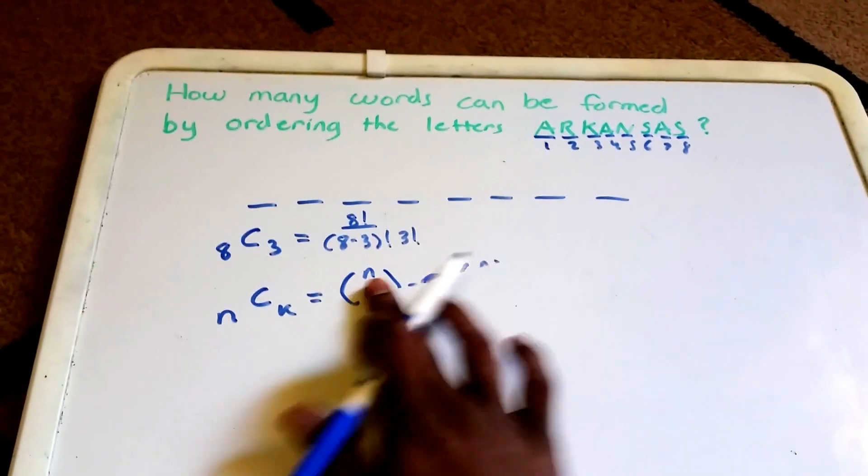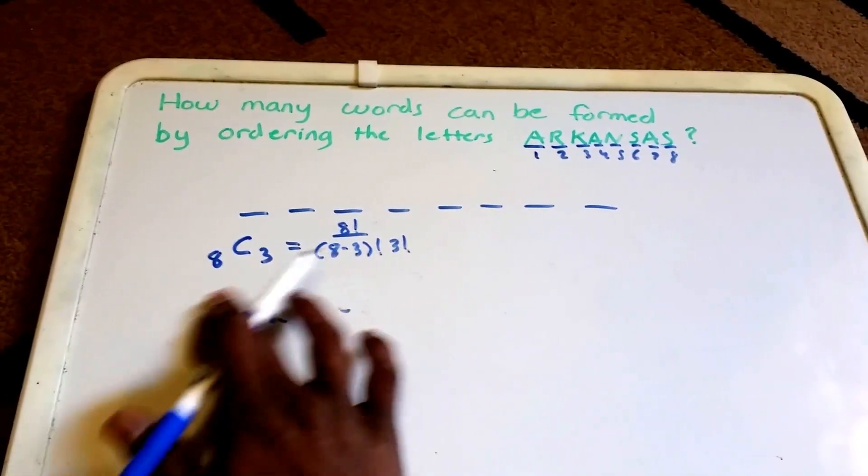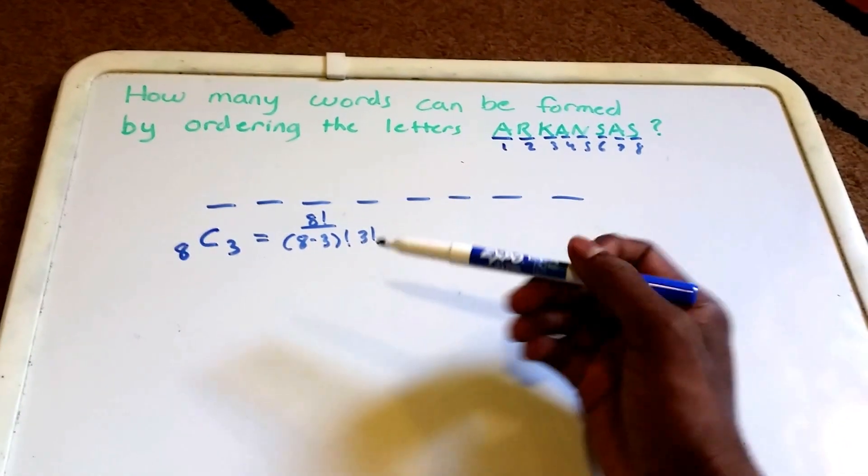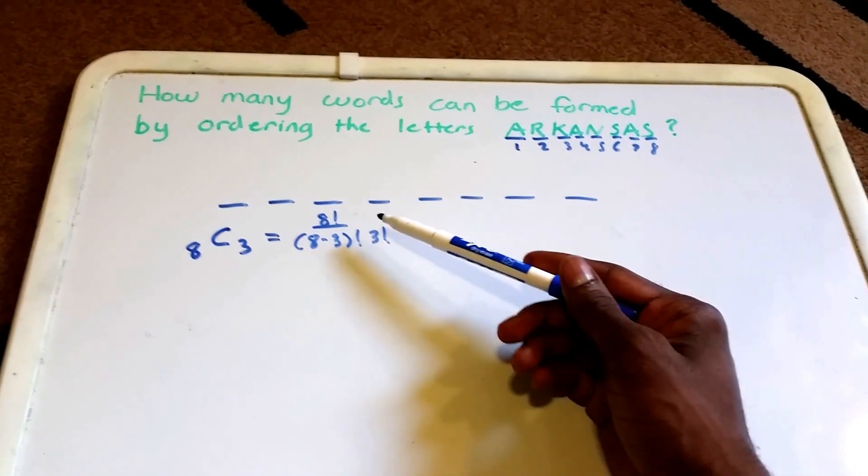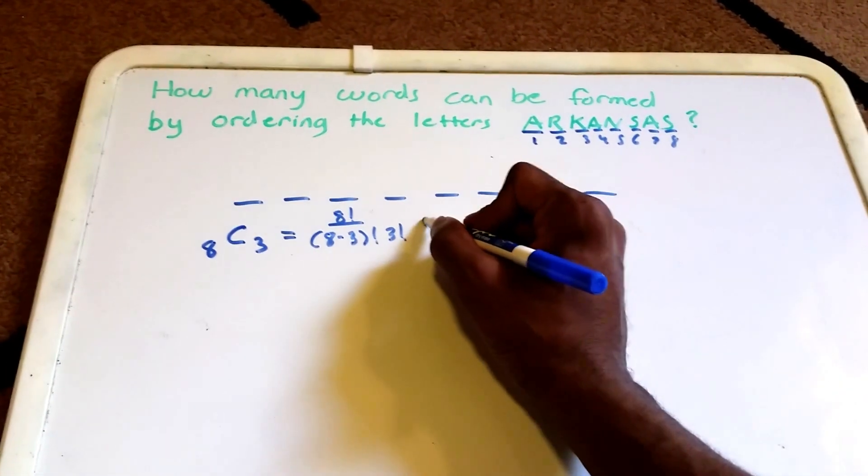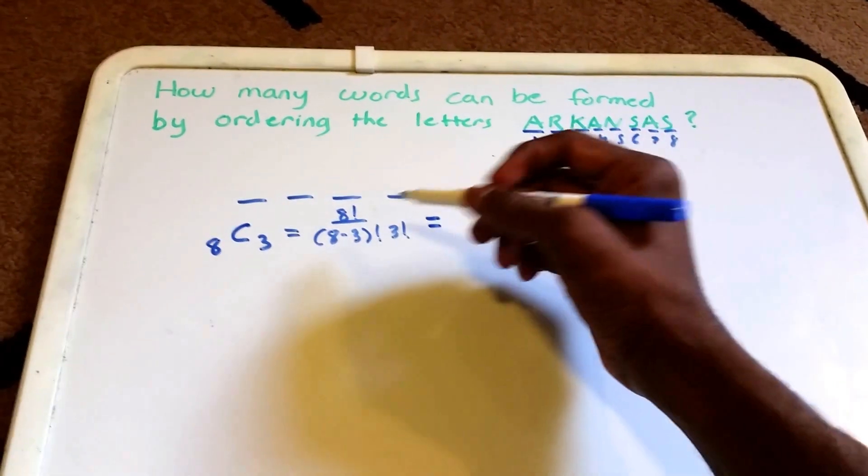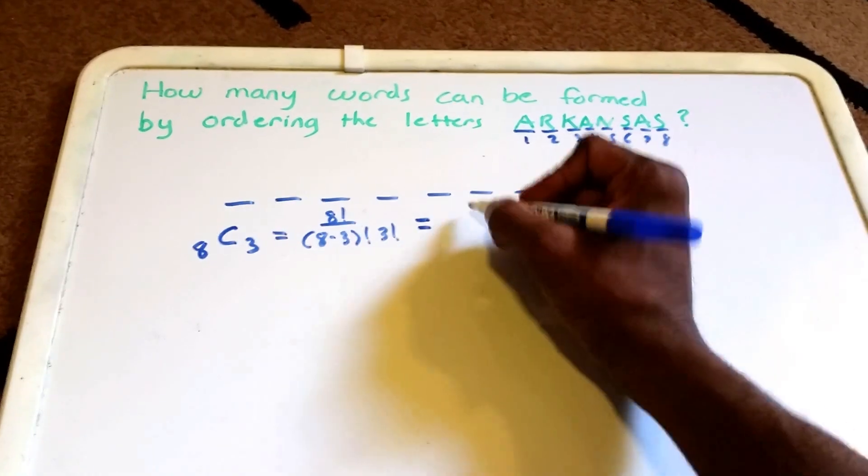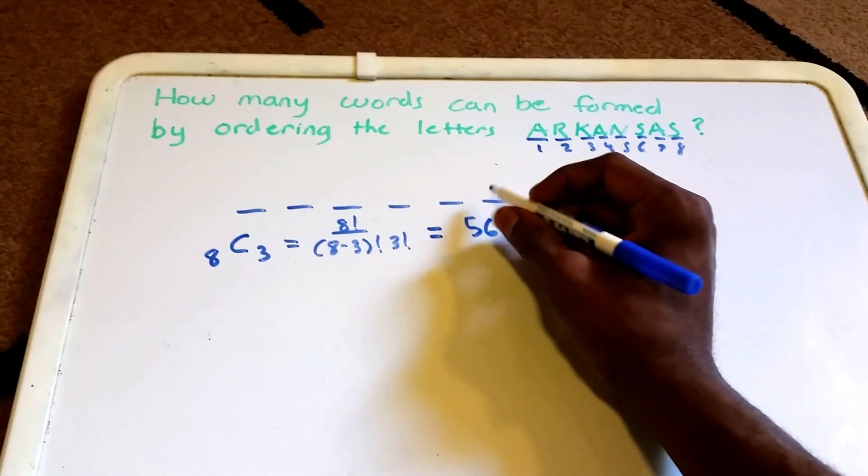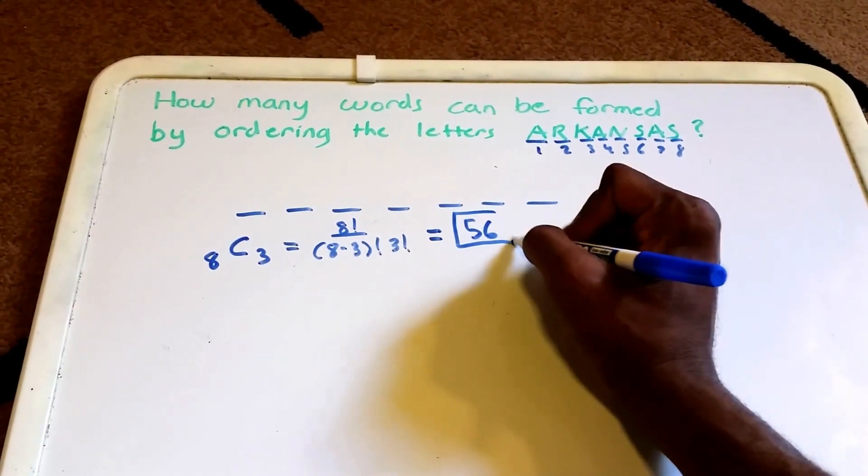This is how we can place the three A's in any three of the eight positions. Let me finish this out and try to simplify it. This is just 8 times 7, which is 56.